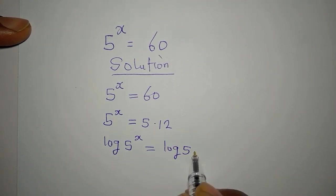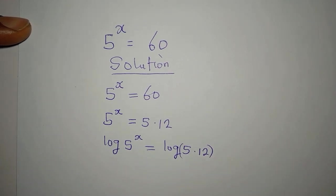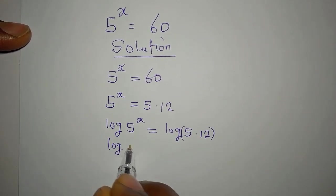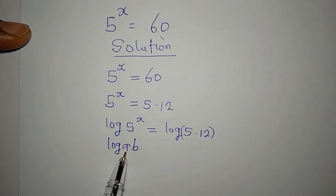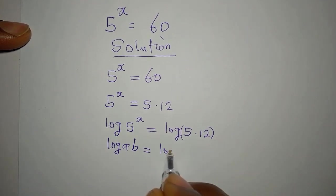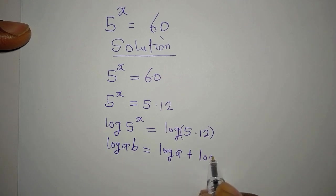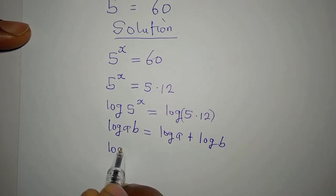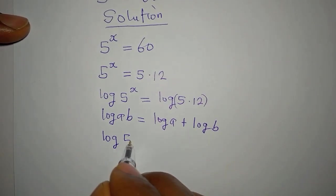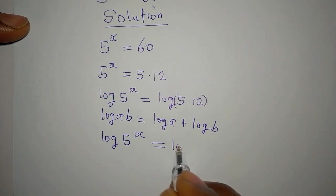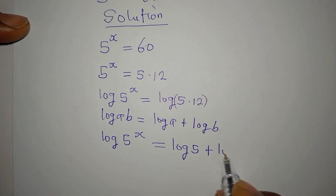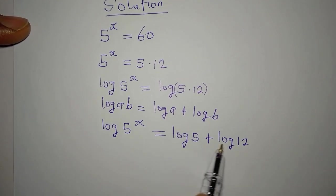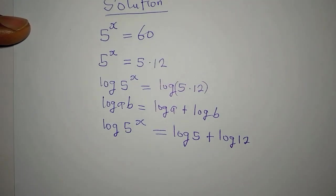If you like, you can write this in brackets. Now, log(a × b) is the same thing as log a plus log b. So I'm going to apply the same thing to what we have here. We have log of 5 to the power of x being equal to log 5 plus log 12. We are saying that log 5 plus log 12 is the same thing as log 60.